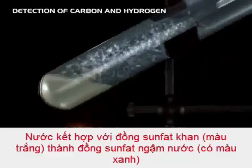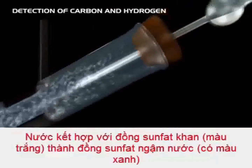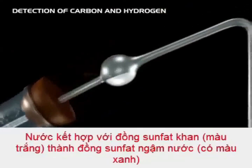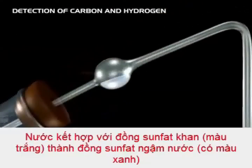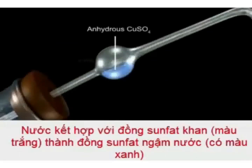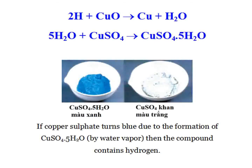If hydrogen is present in the compound, it forms H₂O vapor, or water vapor. Water vapor, when passed over white anhydrous CuSO₄, turns it blue by forming CuSO₄·5H₂O. The reaction involved is: 2H + CuO → Cu + H₂O.